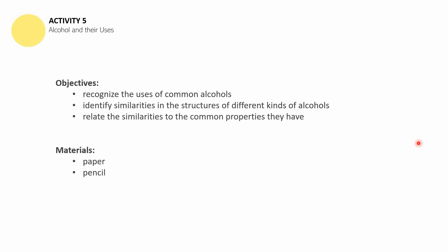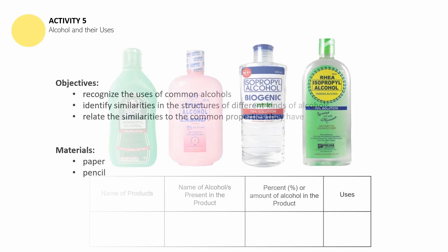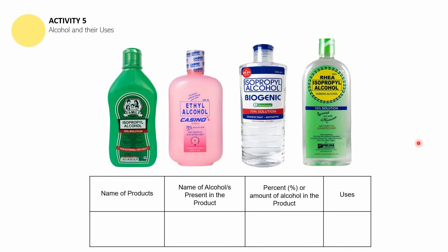We're now through with Activity number 3, the hydrocarbons. Let us now move to Activity number 5: Alcohols and Their Uses. The objectives for this activity are: to recognize the uses of common alcohols, identify the similarities in the structures of different kinds of alcohols, and relate the similarities to the common properties they have. The materials you will need are paper and pencil.